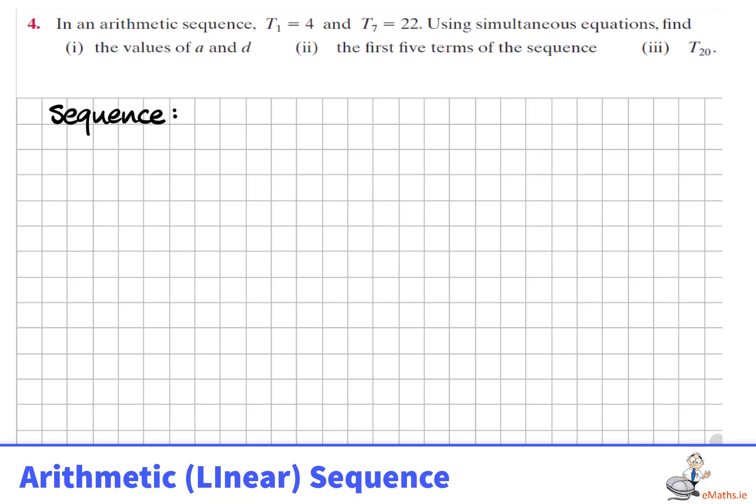I'm going to show two approaches to this arithmetic or linear sequence. First approach, we might imagine what the first seven steps of the sequence are, given that we know term 1 is 4 and term 7 is 22.